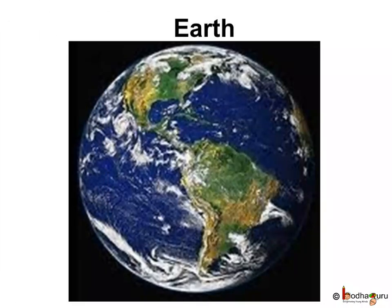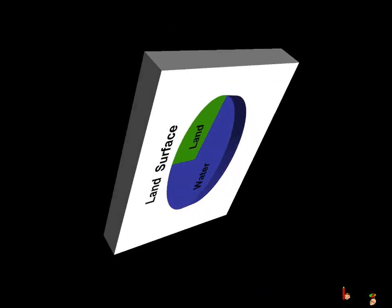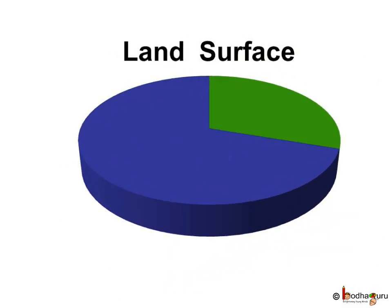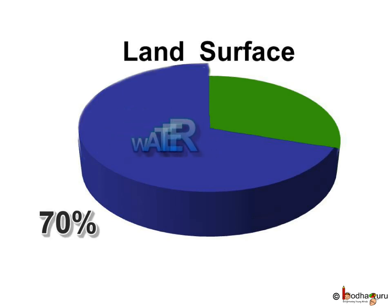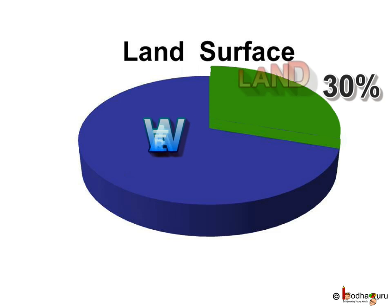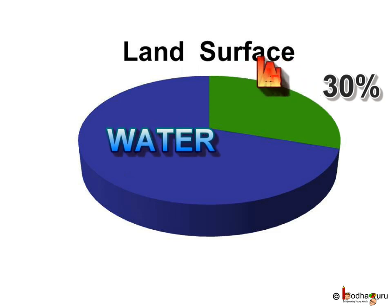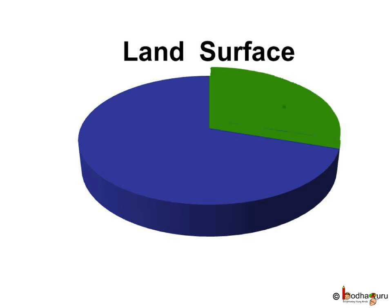Can you tell how much of the earth's surface is land and how much is water? The surface of the earth consists of 70% water and 30% land. The oceans, sea, rivers, lakes, etc. constitute the water bodies. So 70% of the earth is covered by water — that is 326 million trillion gallons. That's a lot of water.